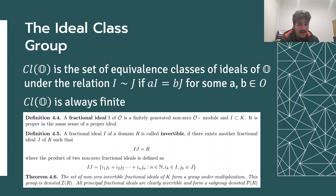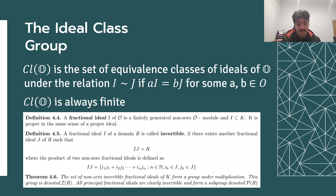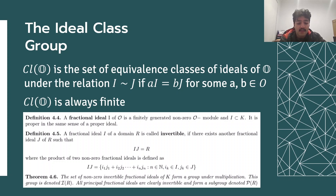It is a famous result in algebraic number theory that the class group of any order is finite, and thus its size is denoted by the class number. Another formulation of the class group is with fractional ideals of an order O — that is, finitely generated O-modules.